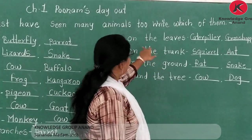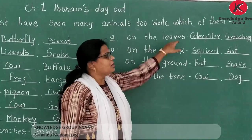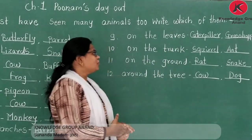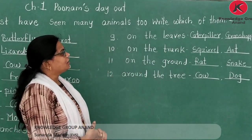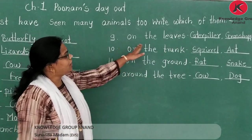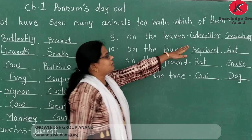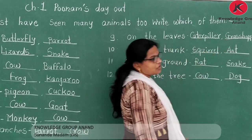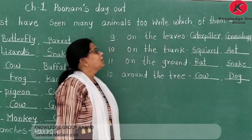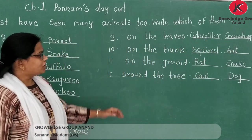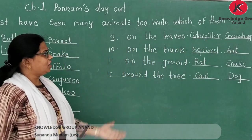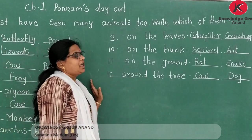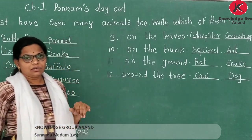Nine number is 'on the leaves.' Leaves pe jo animals rehte hain — woh hain caterpillar and grasshopper. Bohut saare animals hoti hain jo leaves pe rehte hain. Like ants — woh bhi aap mention kar sakte ho.